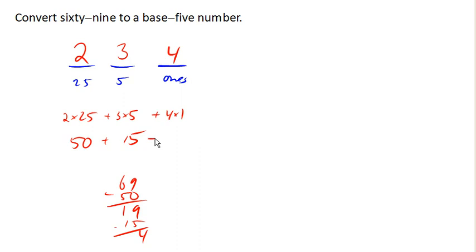And if we take that, 50 plus 15 plus 4 is 69. And so 2 3 4 base 5 is equal to 69 in our usual base of 10.